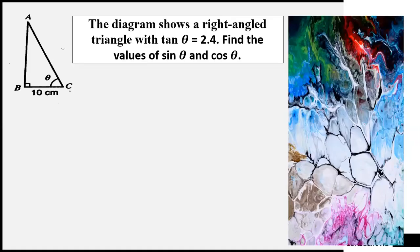The diagram shows a right-angled triangle with tangent theta equal to 2.4. Find the values of sine theta and cosine theta.